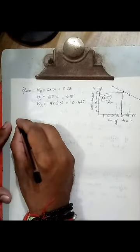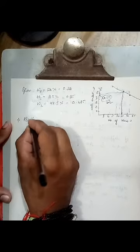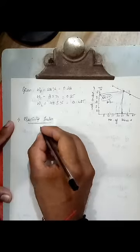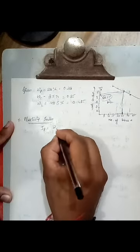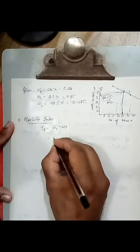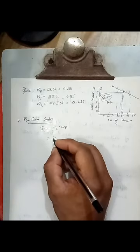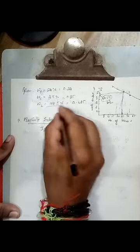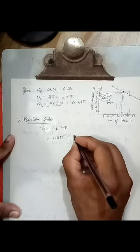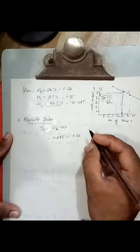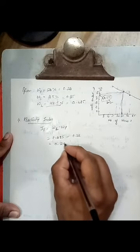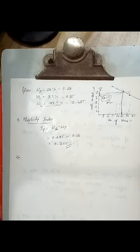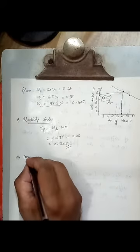So now the calculation of plasticity index. So you have to make this a proper graph. IP is equal to WL minus WP. So 0.485 WL minus 0.28, it is 0.205.